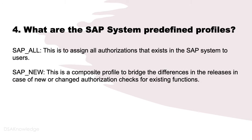What are the SAP system predefined profiles? There are two predefined profiles: SAP_ALL and SAP_NEW. SAP_ALL is used to assign all authorizations that exist in the SAP system to users. SAP_NEW is a composite profile to bridge the differences in releases in case of new or changed authorization checks for existing functions.